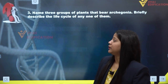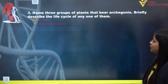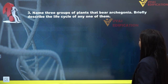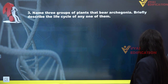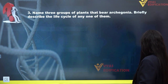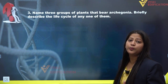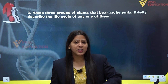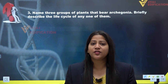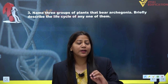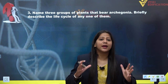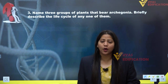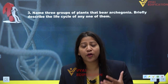Question number three asks us to name three groups of plants that bear archegonia, and also to briefly describe the life cycle of one of them. First of all, what is archegonia? Archegonia are the female sex organ present on the plant body, inside which the female gametes or egg cells are produced.